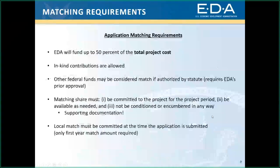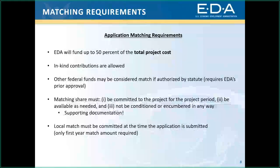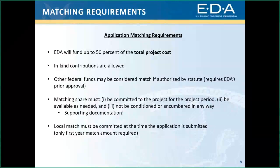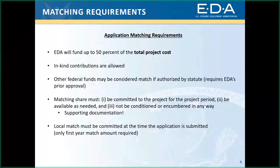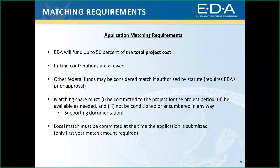EDA will fund up to 50 percent of the total project costs for the University Center program. Salaries are considered cash, so please keep that in mind when mapping out your budget. In-kind contributions are also allowed — examples include third-party volunteer staff time, equipment, and office space. Other federal funding sources are usually not allowed as match for EDA awards, except for CDBG funds. Matching share commitment letters are required for each source of matching funds.